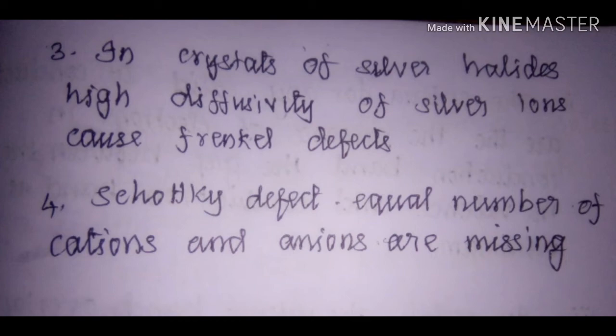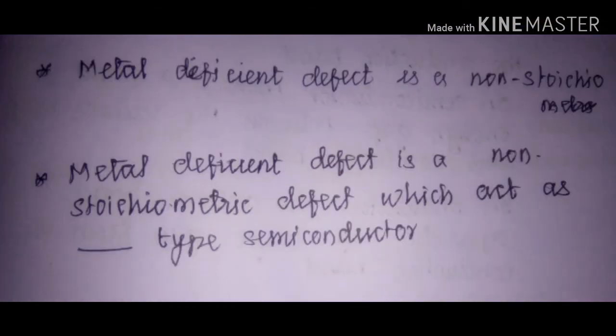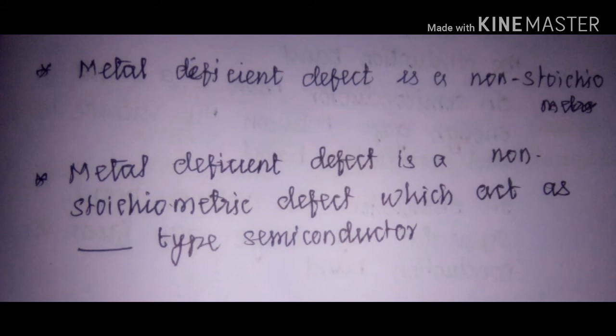Metal deficient defect is a non-stoichiometric defect which acts as a P-type semiconductor. In metal deficiency defects, the vacant sites created by the metal act as positive holes, so these crystals act as P-type semiconductors. Likewise, in metal excess defect crystals, the vacant sites are occupied by extra electrons, and these extra electrons cause the crystal to act as an N-type semiconductor.